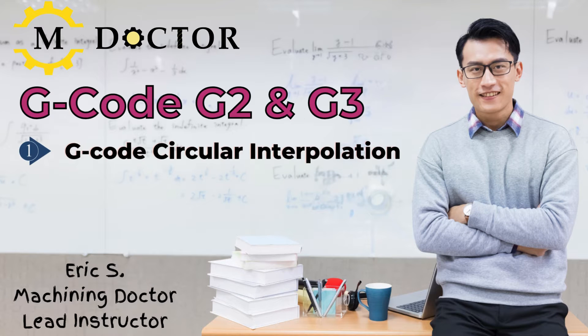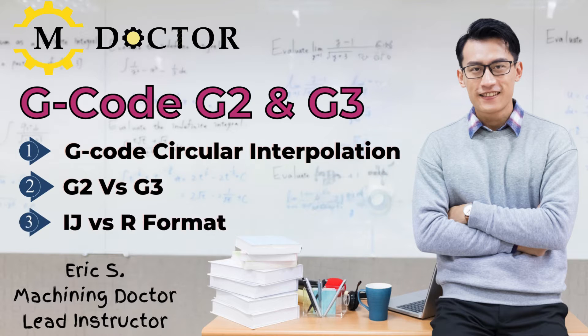How do we perform circular interpolation in G-code programming? What is the difference between G2 and G3? What is the difference between IJ coordinates and XY coordinates? Stay tuned to find out.